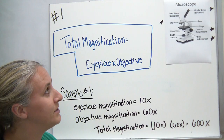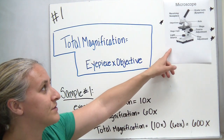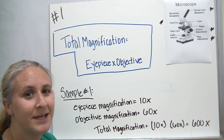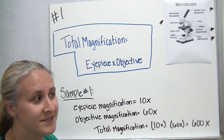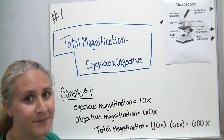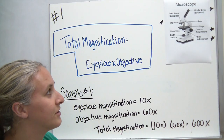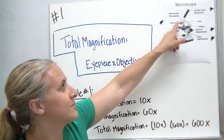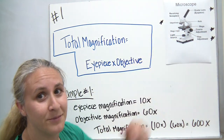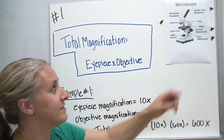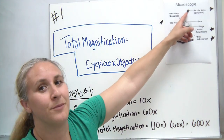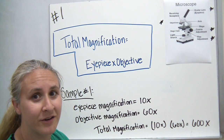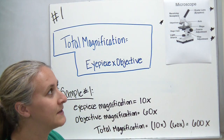Commonly the microscope we're going to be using in class is called a compound microscope. It magnifies the specimen that you're trying to look at when you place it on the slide — it magnifies with one of the objective lenses and also magnifies with what we call the ocular or eyepiece.